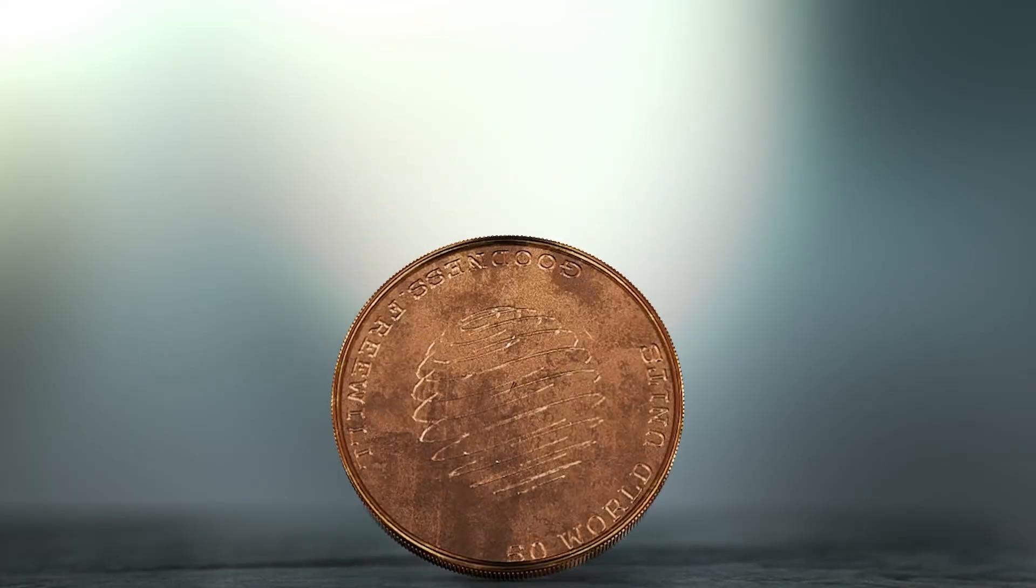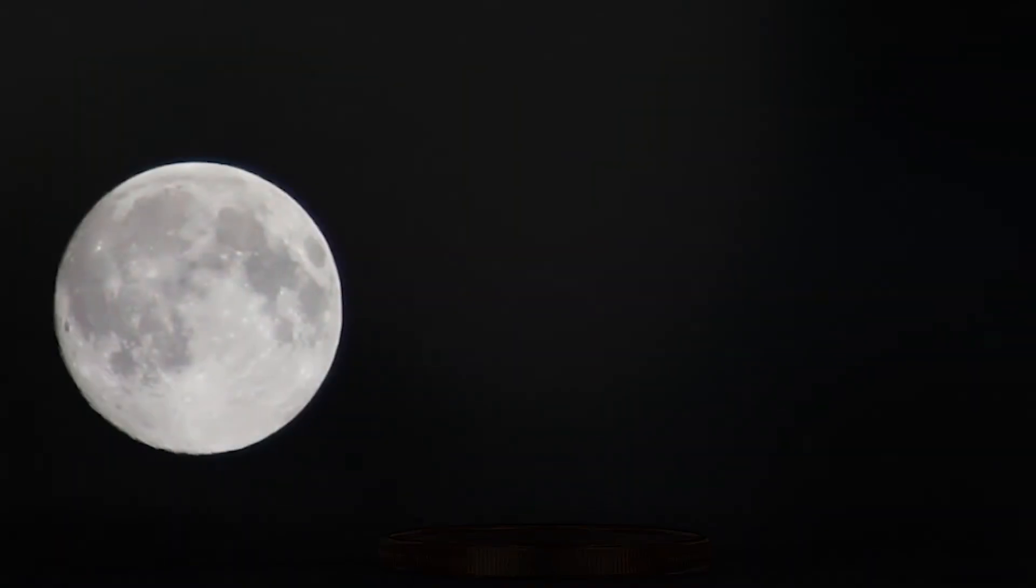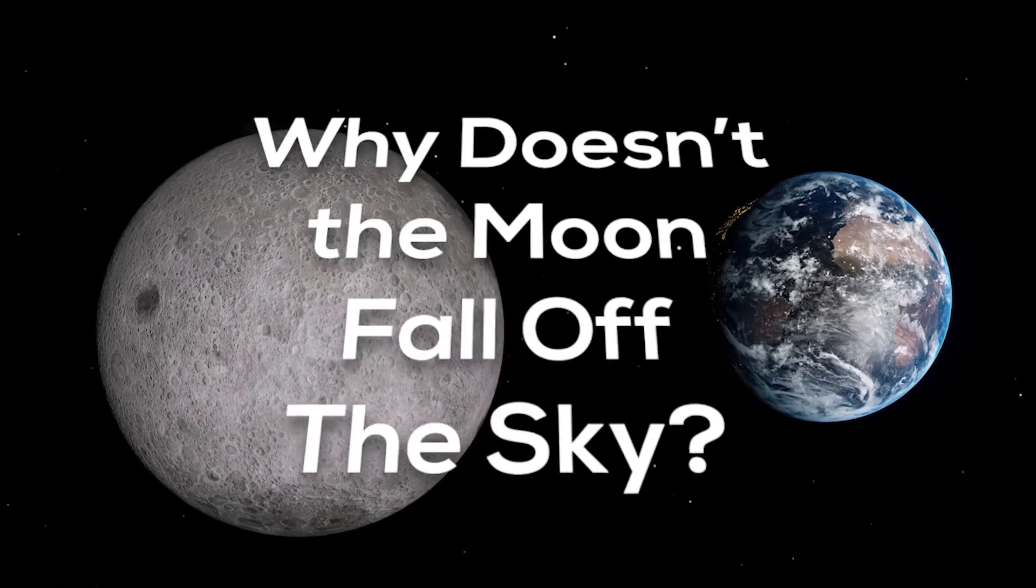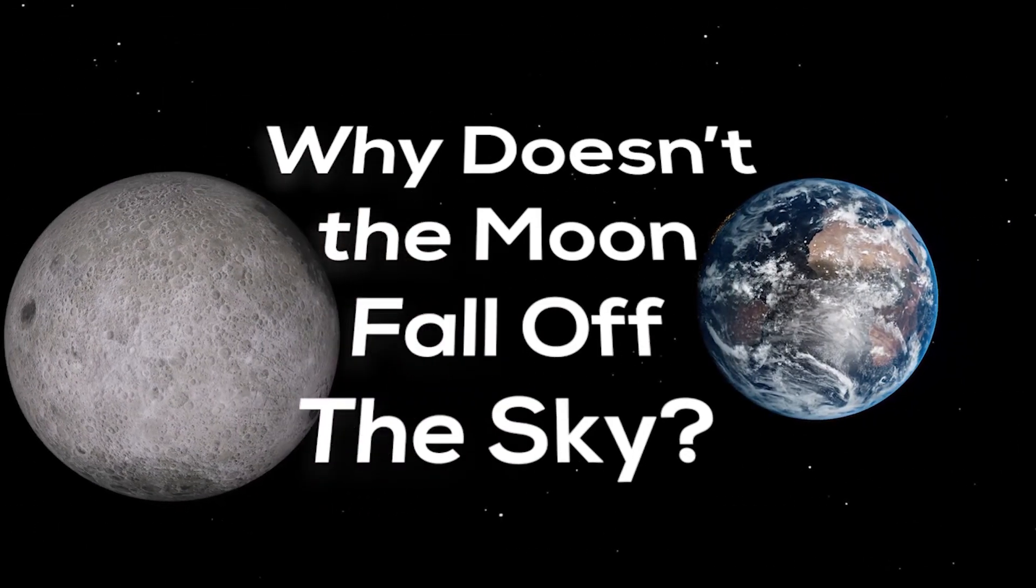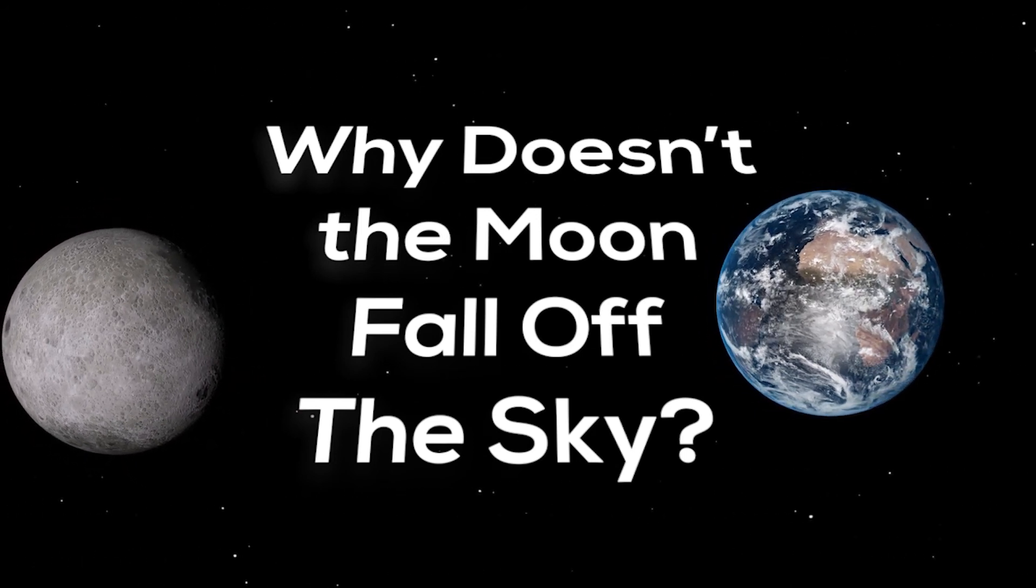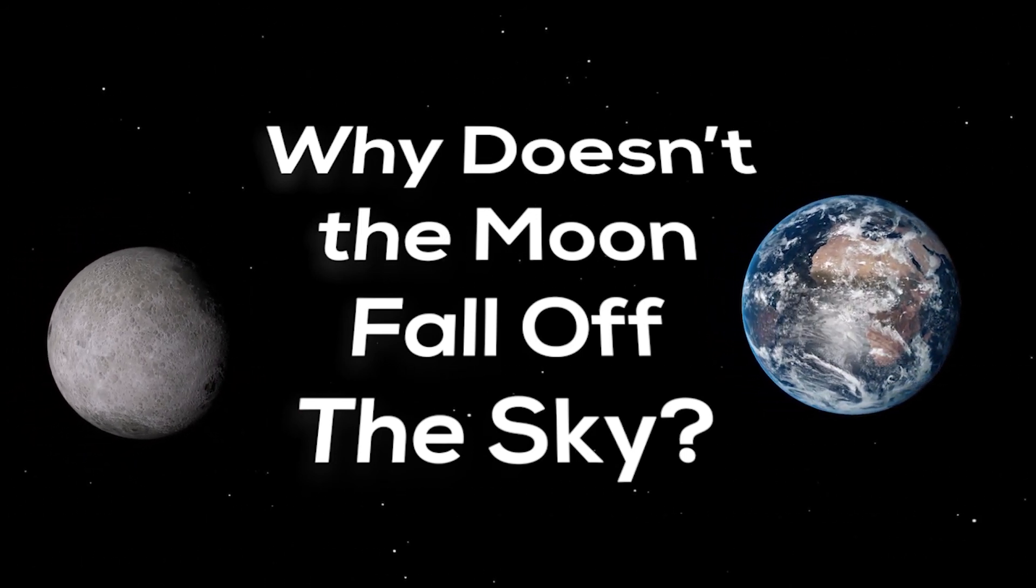In fact, anything that goes up comes back down. But when we look at the Moon up in the sky, a number of questions come to mind. Why doesn't the Moon fall off the sky? Why doesn't it fall on the Earth? What is keeping it in its place? And will it ever fall down on Earth?